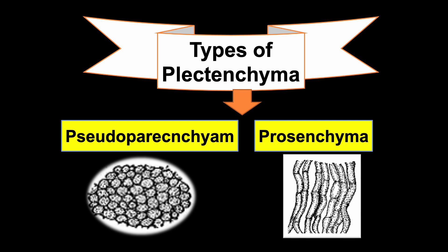In pseudoparenchyma, hyphae are closely packed and interwoven so that they completely lose their individual identity. Pseudoparenchyma always appears as isodiametric cells, giving the tissue a parenchyma-like appearance. In prosenchyma, however, hyphae are loosely interwoven and lying more or less parallel to each other. Here hyphae are longitudinally oriented and cells are clearly distinguished from one another.